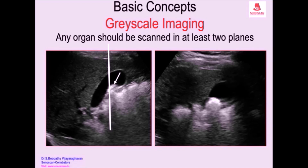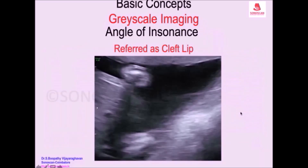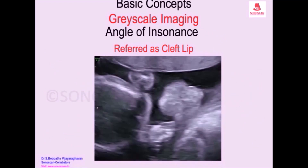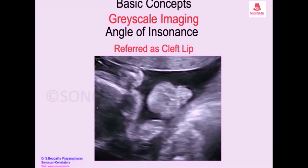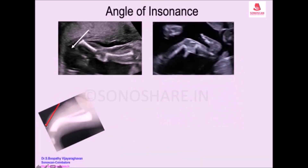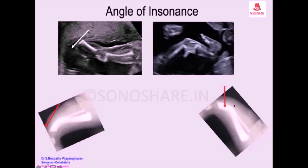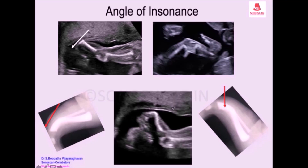The structure is not seen well because what we are interested in is the upper margin — the upper lip. Here you see this part of the tibia is parallel to the beam, and when it is parallel, you get a drop-out artifact at that particular angle.